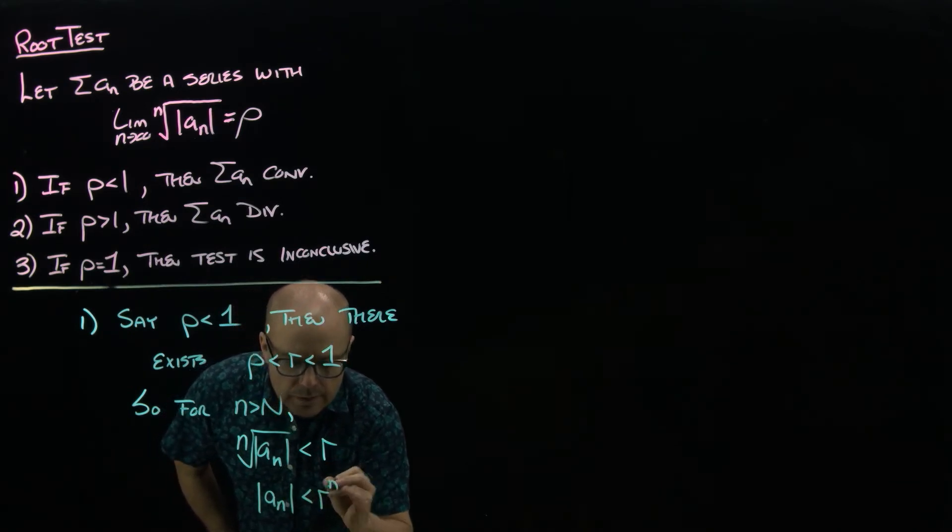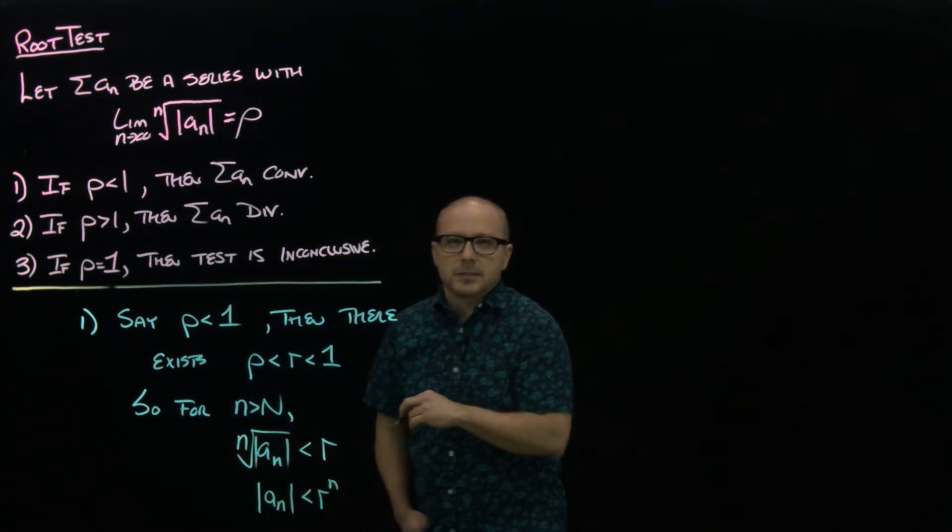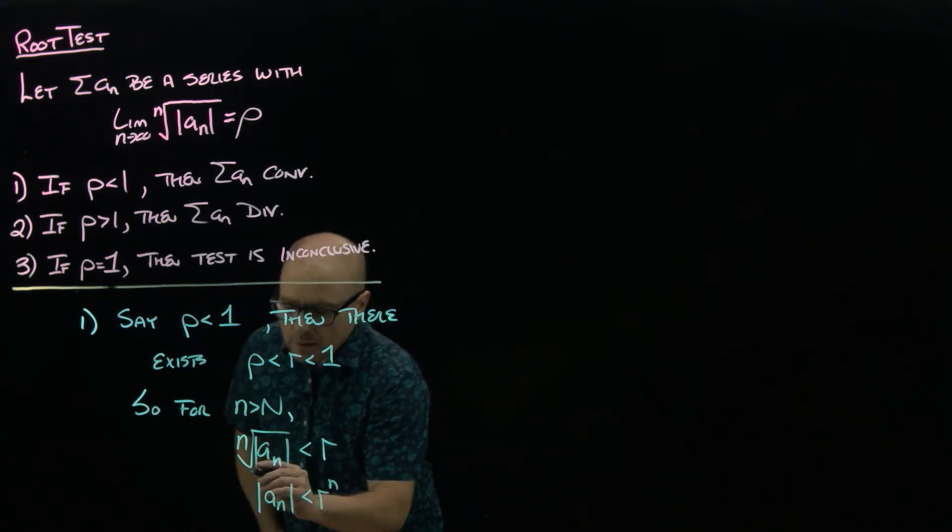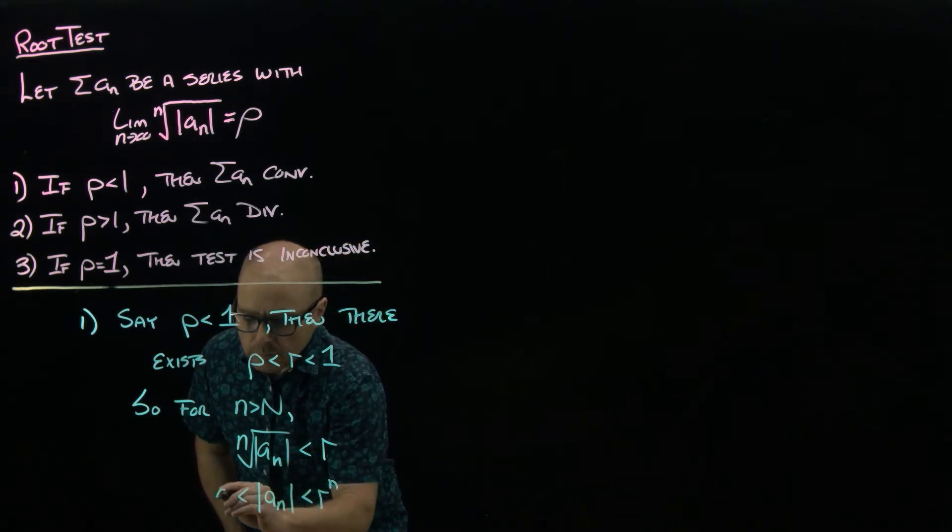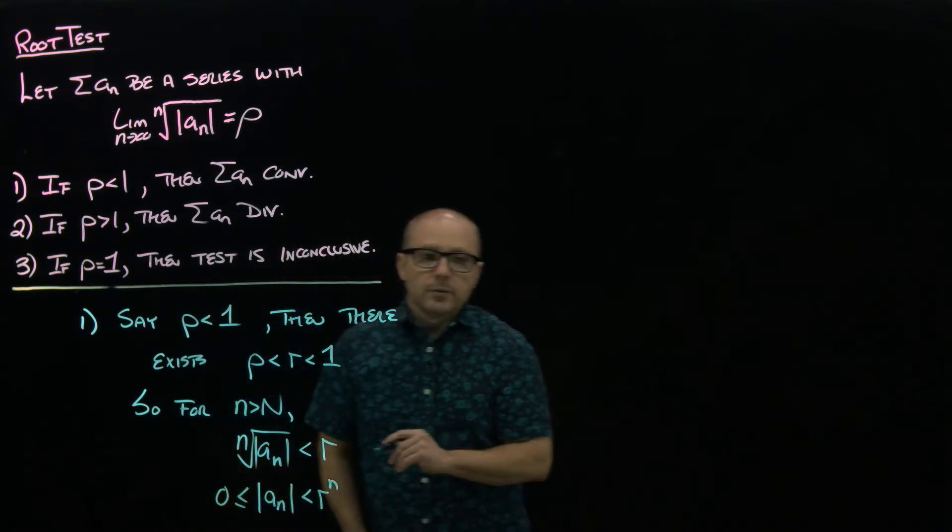But what happens if we just raise both sides to the nth power? Then all you have is that the terms are all less than r to the n, and you could argue that they're greater than or equal to zero because of their absolute value.